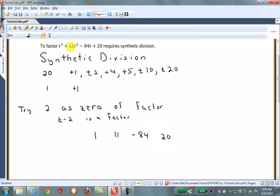Remember, if any of these coefficients, if any terms were missing, for instance, if it would have been t cubed minus 84t plus 20, no t squared term, we'd have to use a 0 in place of that. And then, to check this, let's try to see if t minus 2 is a factor. So, we'll use the number 2 here.